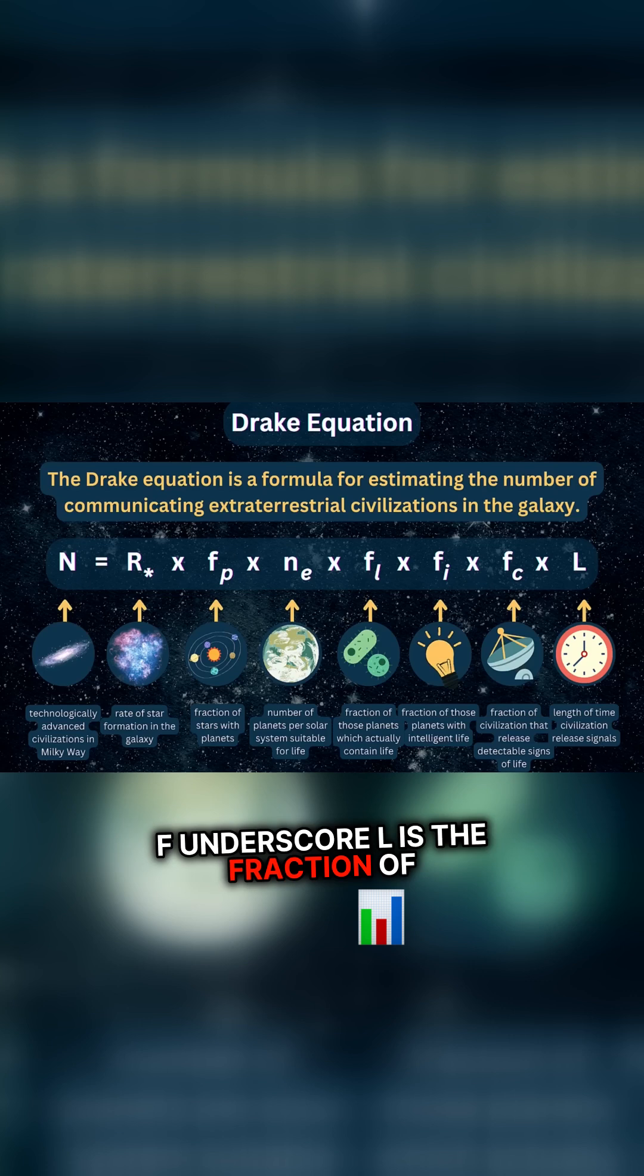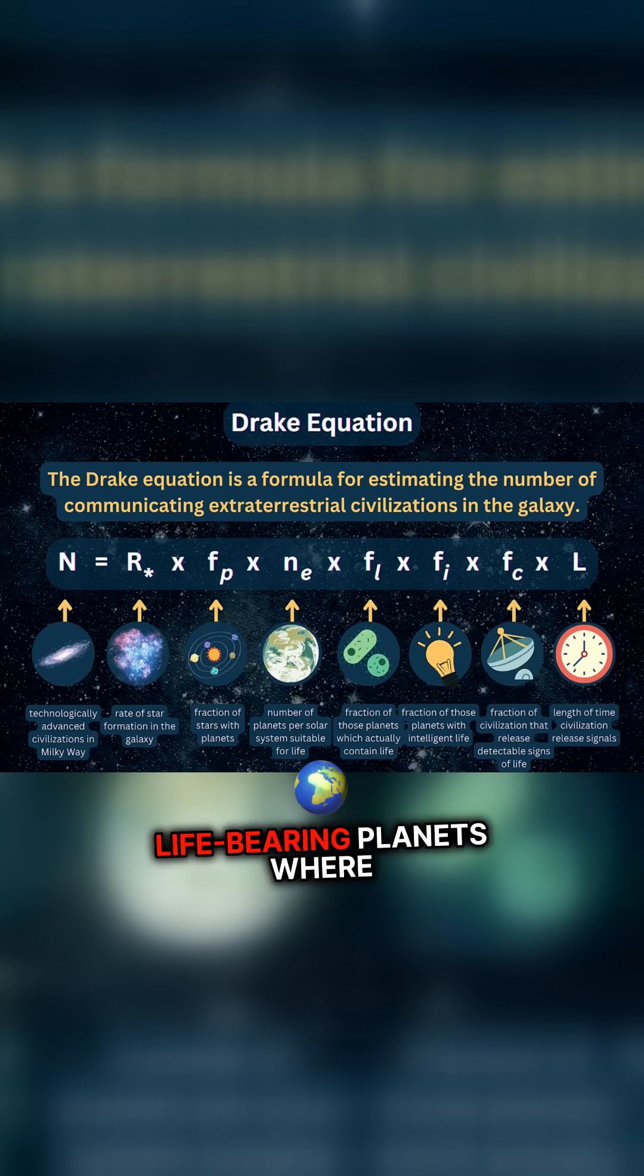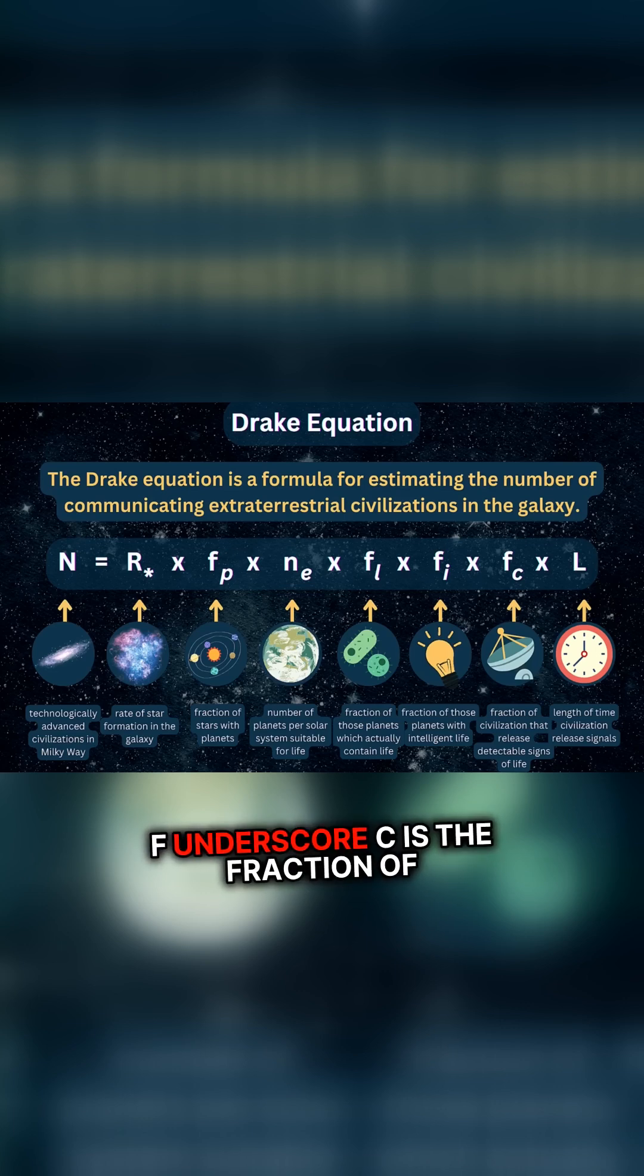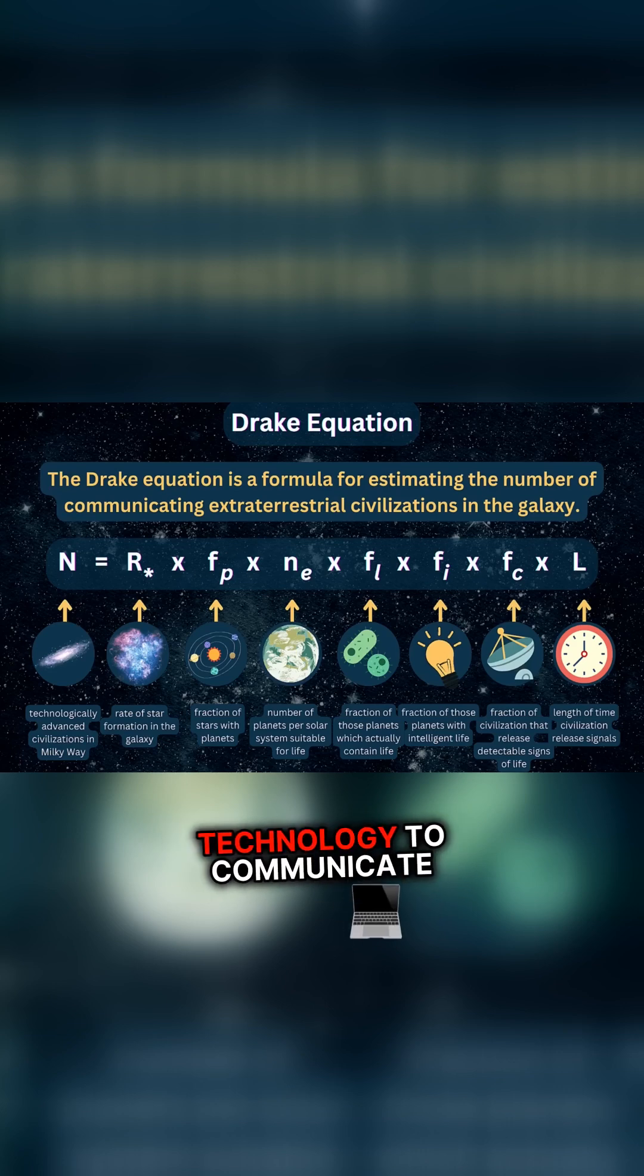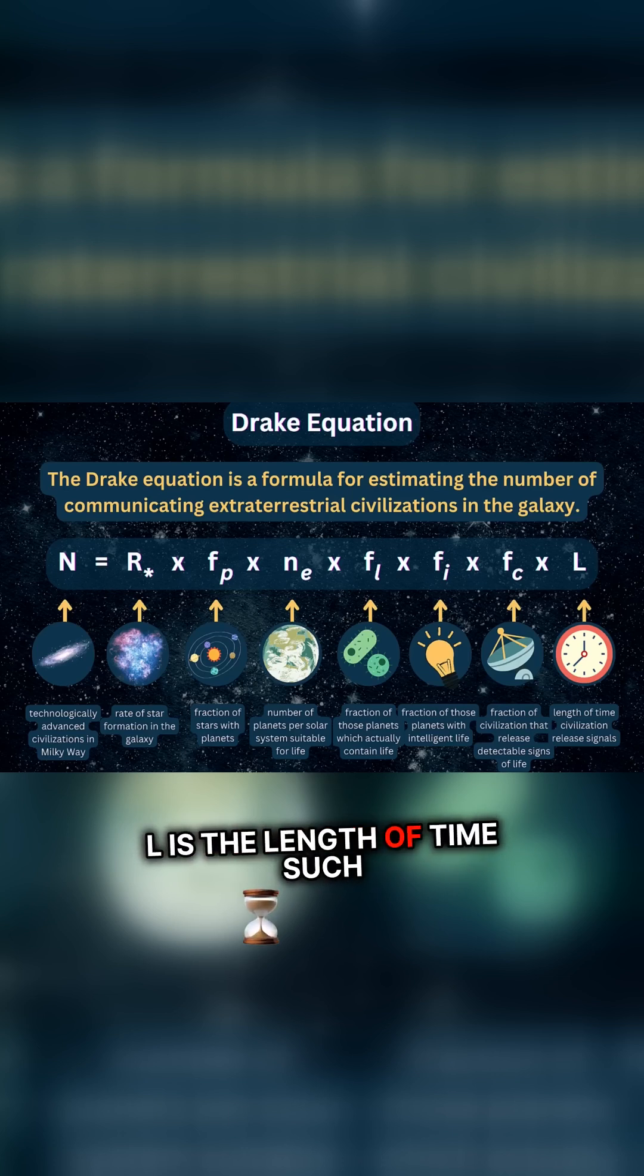F underscore l is the fraction of those planets where life actually develops. F underscore i is the fraction of life-bearing planets where intelligent life evolves. F underscore c is the fraction of civilizations that develop the technology to communicate across interstellar distances. L is the length of time such civilizations can communicate.